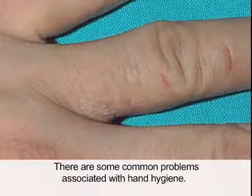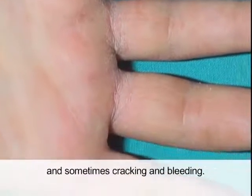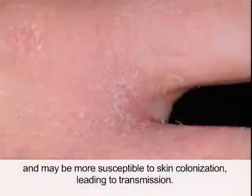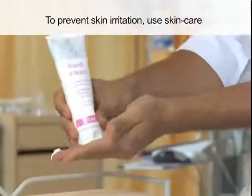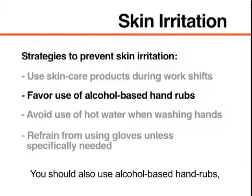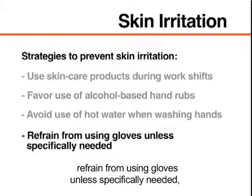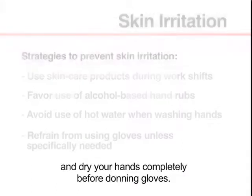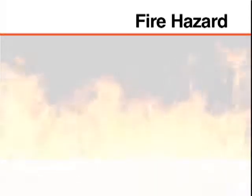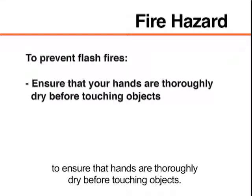There are some common problems associated with hand hygiene. Irritation dermatitis can occur after repeated use of hand hygiene products. Common symptoms include dryness, itching, and sometimes cracking and bleeding. In rare cases, allergic dermatitis can occur. Damaged skin is more difficult to disinfect and may be more susceptible to colonization, leading to transmission. To prevent skin irritation, use skincare products frequently during work shifts, use alcohol-based hand rubs, avoid hot water when washing hands, refrain from using gloves unless specifically needed, and dry your hands completely before donning gloves. Alcohols are flammable. Although exceedingly rare, flash fires can occur if caregivers touch open flames or a static spark occurs when hands are still coated with alcohol. Ensure that hands are thoroughly dry before touching objects.